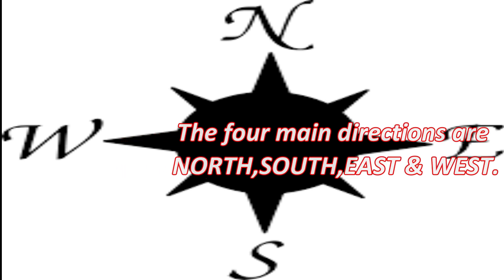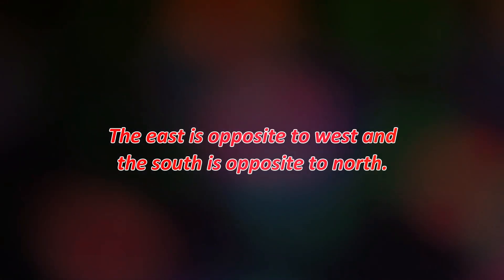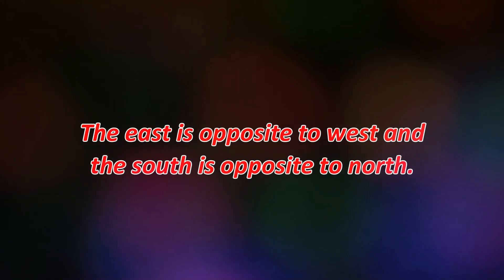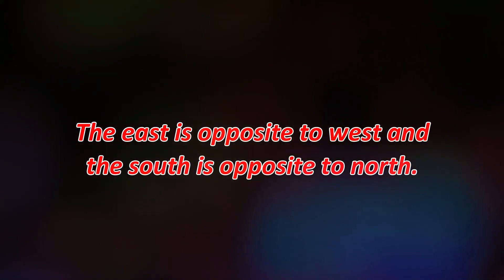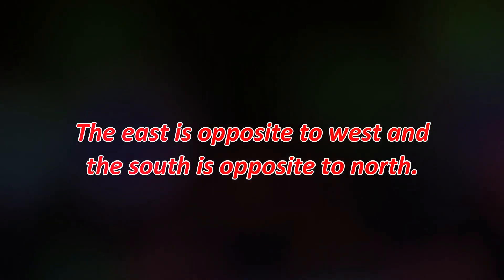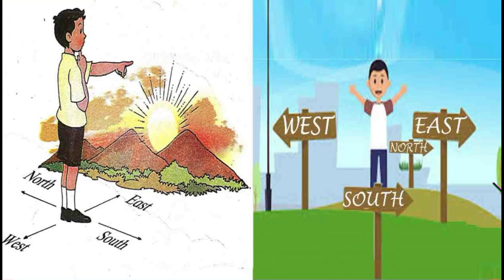How do we identify their positions? The East is opposite to West and the South is opposite to North. A question must be arising in your mind: how to identify the directions? Let us understand the directions with the help of these two pictures. The direction in which the Sun rises is East, and the direction in which the Sun sets is West.